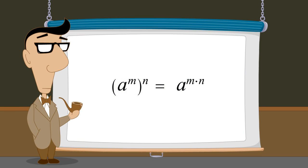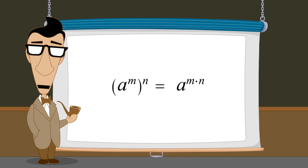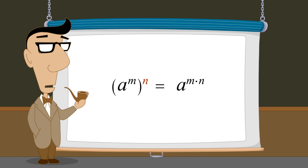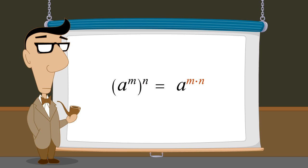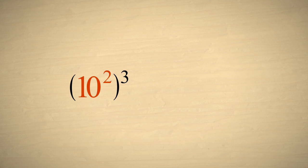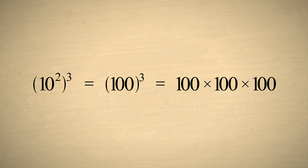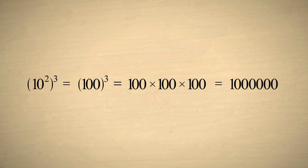So the result is a to the m times n power. As a general rule, if we take any term with an exponent of m and raise that exponential term to the n-th power, we can multiply the two exponents. For example, if we take ten squared and cube it, this is the same as one hundred cubed, and one hundred times one hundred times one hundred is one million, which is ten to the sixth power.